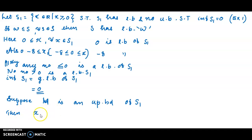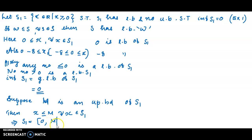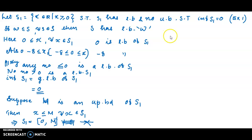If M is an upper bound of S1, then x is less than or equal to M for all x element of S1. But S1 contains every real number greater than or equal to 0, so M would have to be greater than or equal to every real number — which is a contradiction. Therefore S1 has no upper bound.